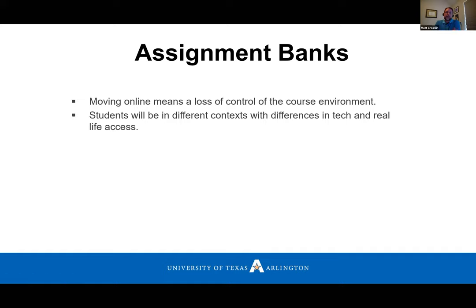Because students will be in different contexts with differences in real-life access to things, you have to think of assessment in a more flexible way. They may not have access to things — if you want to grade a term paper, what if the library website goes down? We're seeing articles about the internet showing stress and strain. Netflix and Spotify are even reducing streaming quality. So we're probably going to need to take an even greater measure of flexibility in our assessments than has been the norm for online learning up until now.